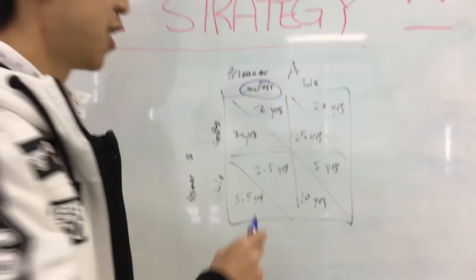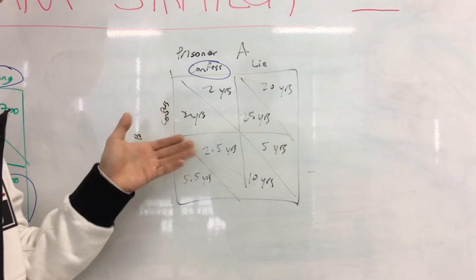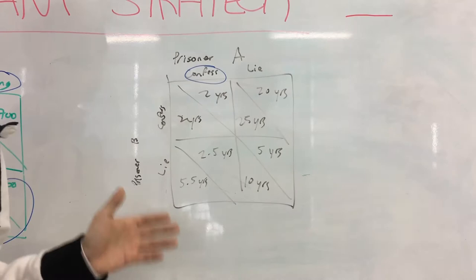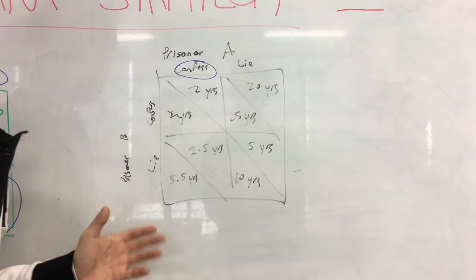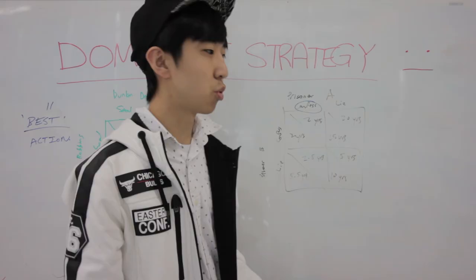Looking at it from the perspective of prisoner B: if prisoner A were to confess, prisoner B would choose to confess because two years is less than 5.5. But if prisoner A decides to lie, prisoner B faces 25 years or 10 years, and would decide 10 years. As there is a mix and match of situations, there is no dominant strategy for prisoner B — only a dominant strategy for prisoner A.